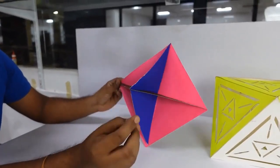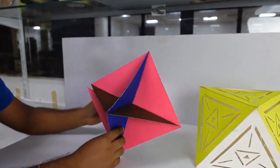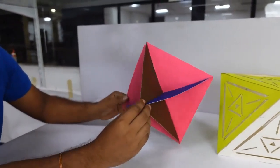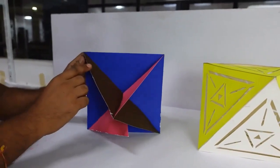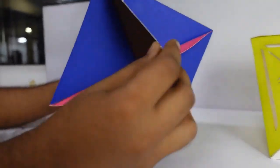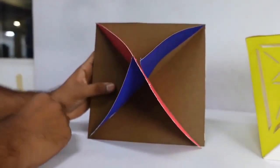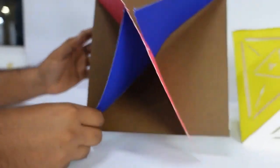This octahedron we see here is made of three squares: one with pink color, one with blue color, and one with brown color. The three squares combined will form a shape called octahedron, as we can see here.